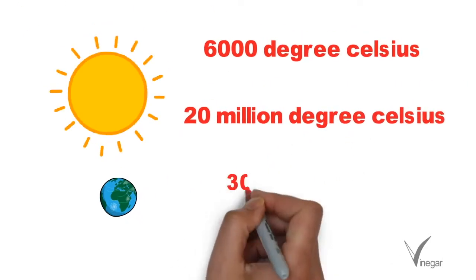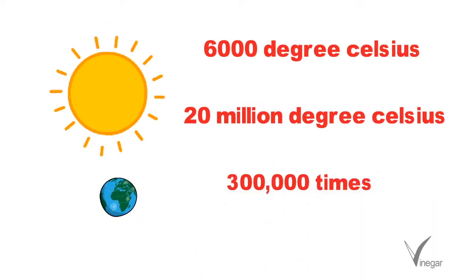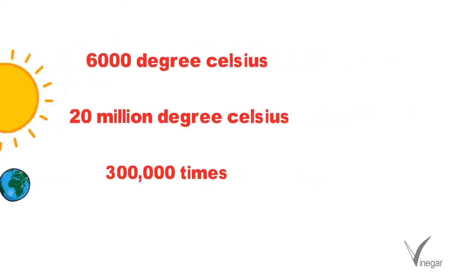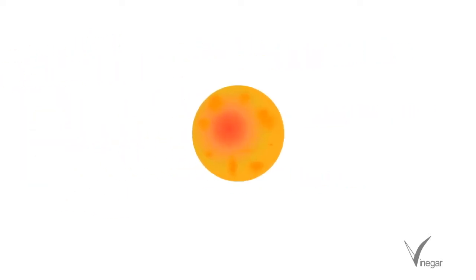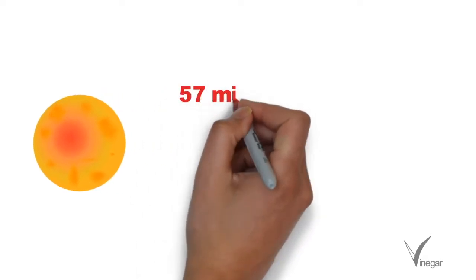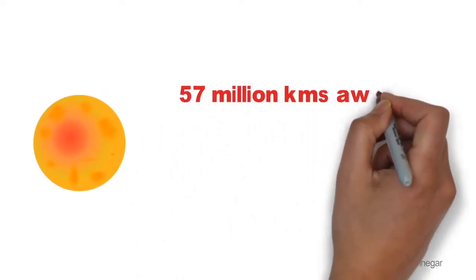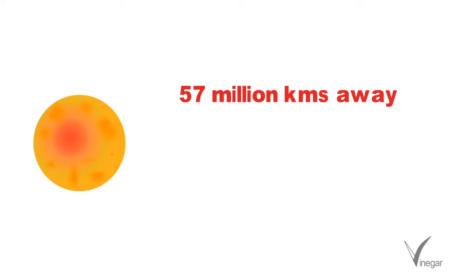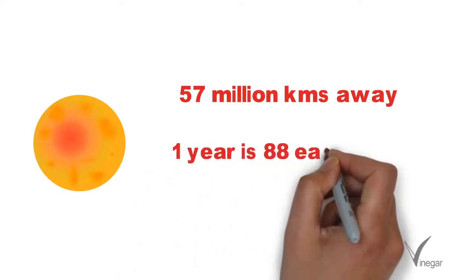The sun is around 300,000 times bigger than the earth. We will now talk about planets. Mercury is the smallest and also closest to the sun. It is 57 million kilometers away from the sun and here one year is 88 days long.